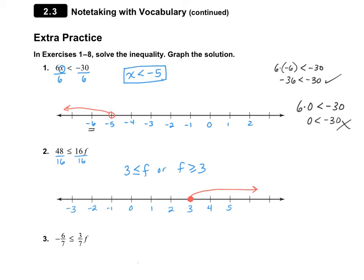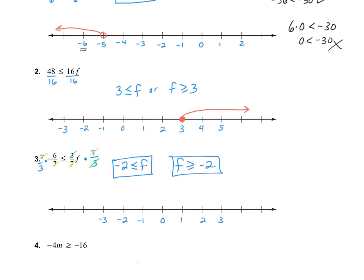Let's take a look at number 3. This time we have a fraction, so remember what you need to do — every time you have a fraction, you want to multiply by the reciprocal. So multiply by 7 over 3 on both sides. The reason is 7 divided by 7 is 1, and 3 divided by 3 is 1, so you're only left with the variable f. On the left side, cancel out the 7s and you're left with negative 6 divided by 3, which gives us negative 2. So we have negative 2 is less than or equal to f, or f is greater than or equal to negative 2. On the number line, we have a closed circle at negative 2, heading up.